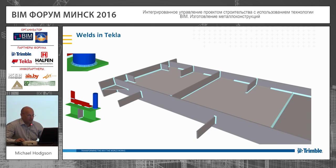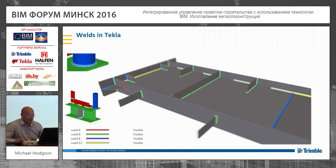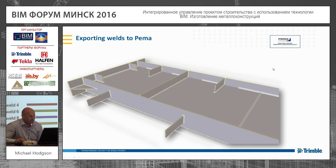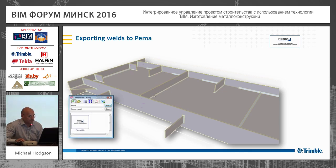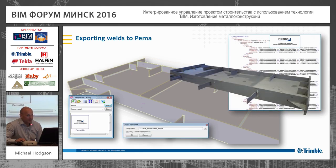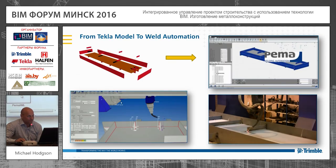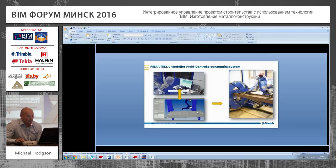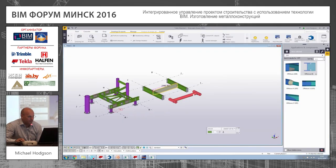You can colour code the welds if you want to. Then we read that data out, take it to the machine with a simple export. It takes that file and passes it to the machine, which does automatic welding of that piece based on the model.